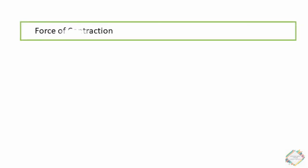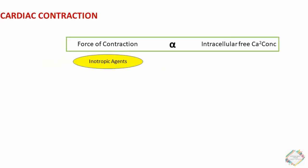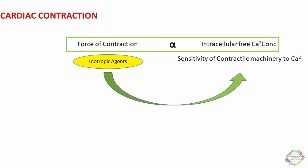Regarding cardiac contraction, the force of contraction of cardiac myocytes is directly related to the concentration of free unbound cytosolic calcium. Agents that increase intracellular calcium levels or increase the sensitivity of the contractile machinery to calcium will increase the force of contraction. This effect is known as the inotropic effect, and inotropic agents can increase contractility by directly or indirectly altering mechanisms controlling intracellular calcium concentration.